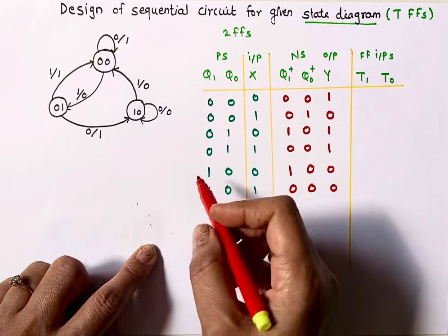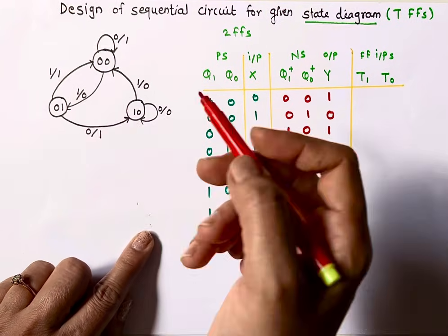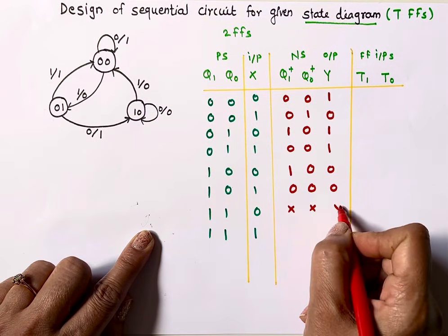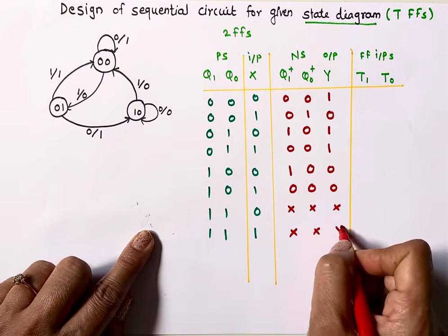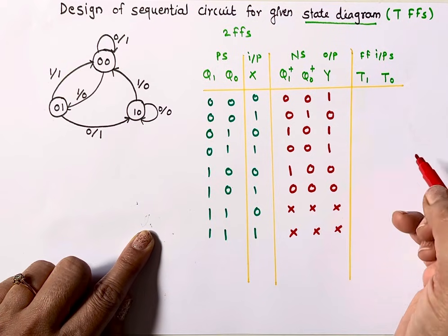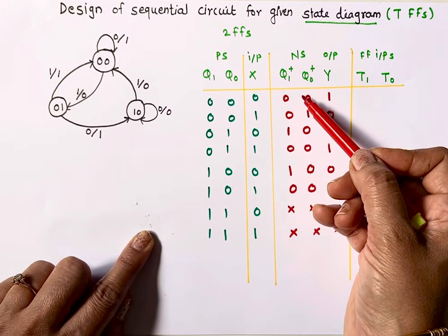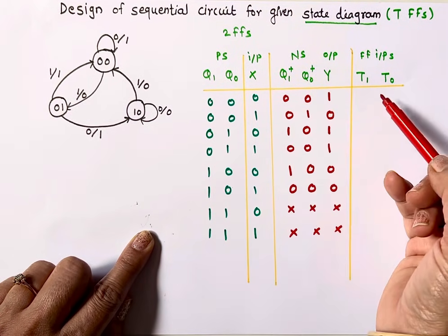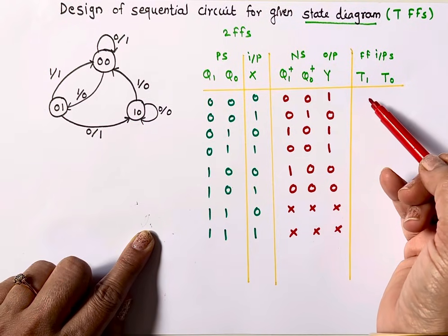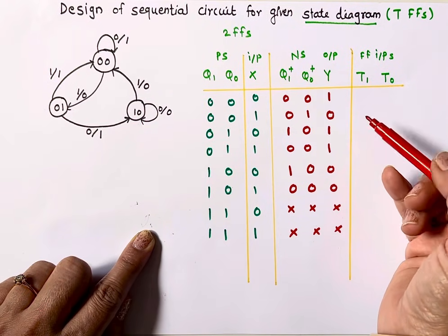State 11 is not present in my state diagram, so there is no next state for it — I will mark it as don't care. Now we know the present output and expected output. What I need to identify are the inputs to the flip-flops, and for that we use the excitation table.